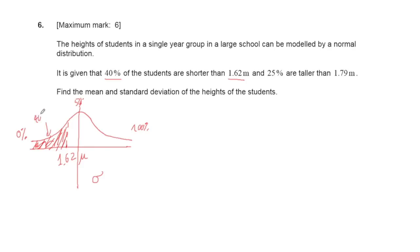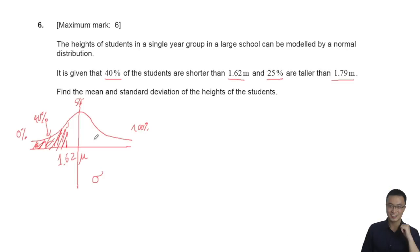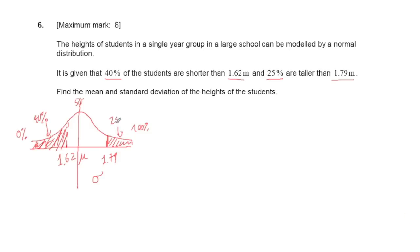We have 40% taller than 1.62m. For 1.79m, 25% are taller — meaning the area to the right of 1.79 is 25%. Since 25% is less than 50%, 1.79 also sits to the right of the mean. The area under the curve in that section will be 25%.